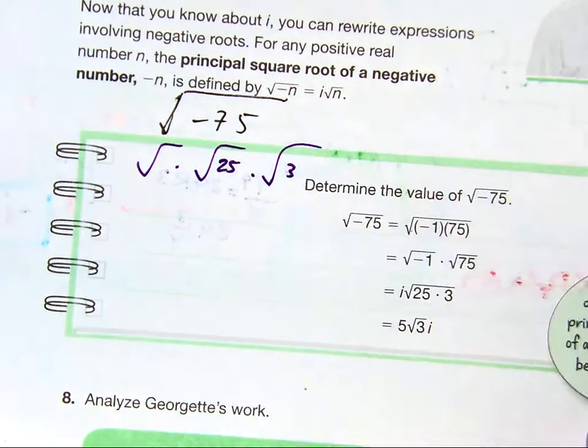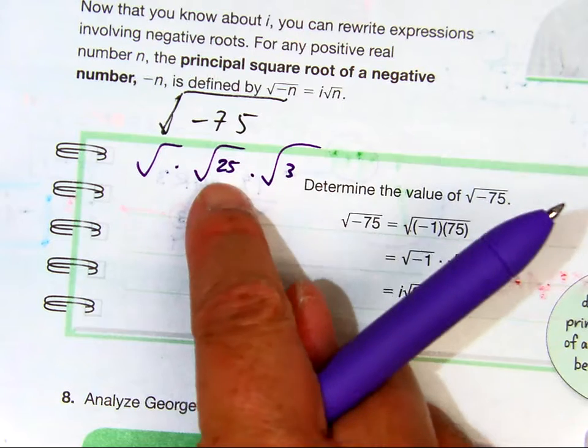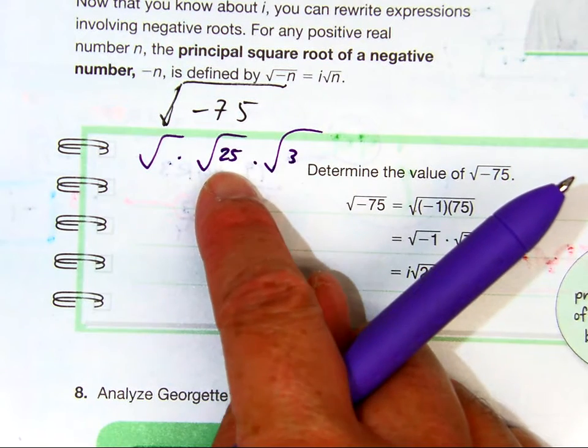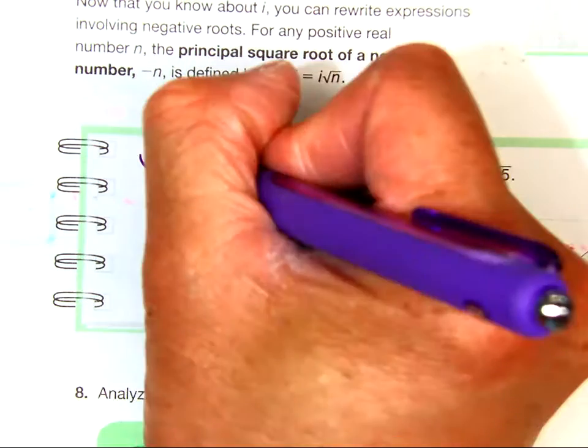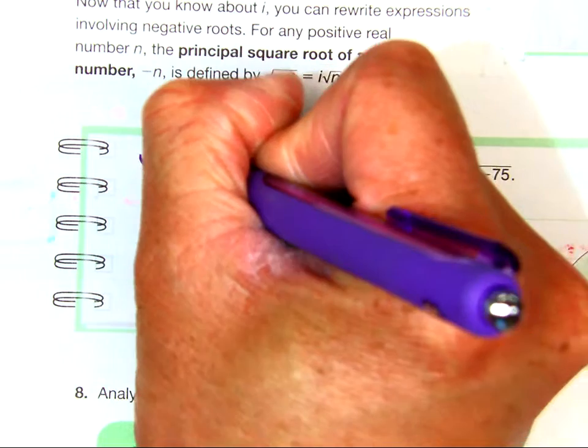25 times 3. But 3 times 25 gives me a positive 75. So this would have to be a negative 1.